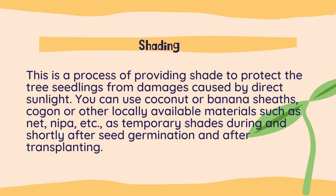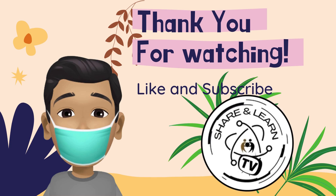This will avoid nutrient loss and possible fertilizer burn on the plants. The fourth and last care practice is shading. This is the process of providing shade to protect the tree seedlings from damage caused by direct sunlight. You can use coconut or banana leaves, cogon, or other locally available materials such as net, nipa, etc., as temporary shades during and shortly after seed germination and after transplanting.